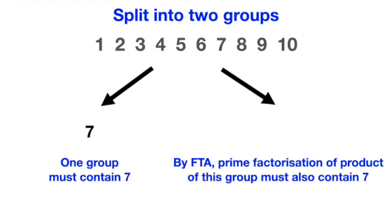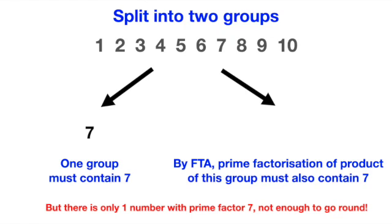However, among the numbers from 1 to 10, there is only one number which has prime factor 7, which is 7 itself, but is already assigned to the first group, leaving no more factors available for the second group. Therefore, there's no way for the product of both groups to be the same.